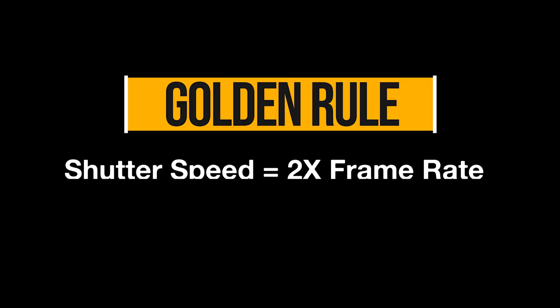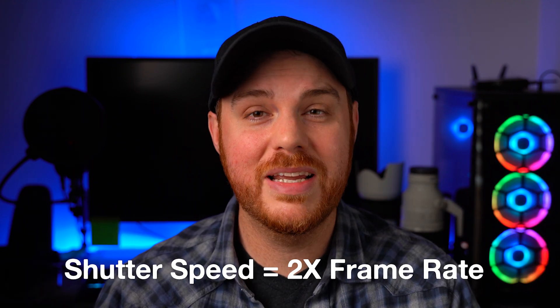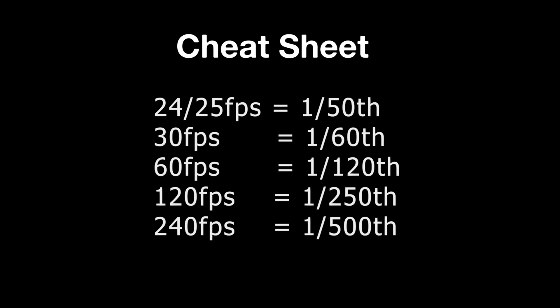The number one rule I want you to ingrain in your brain: your shutter speed should be double your frame rate. Remember that, because forgetting it can make for some weird-looking footage. If you're shooting at 30 frames per second, your shutter speed should be around 60. If you're shooting at 120 frames per second, you want your shutter speed around 250. It's really that simple, but very important.